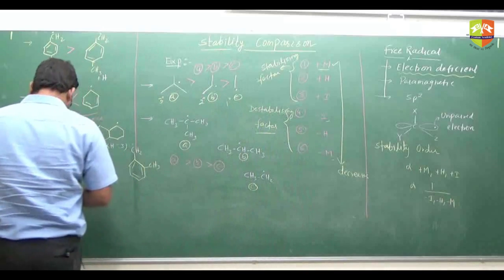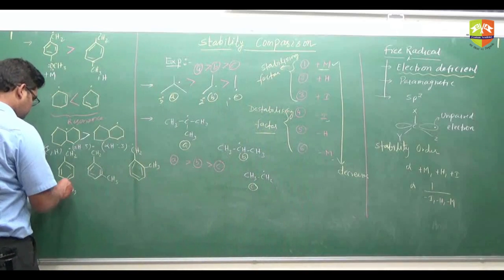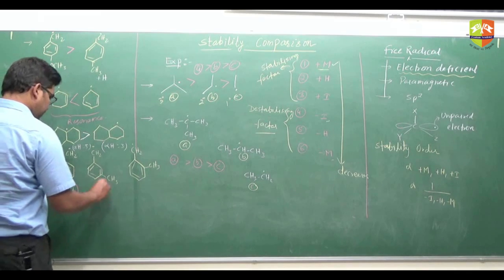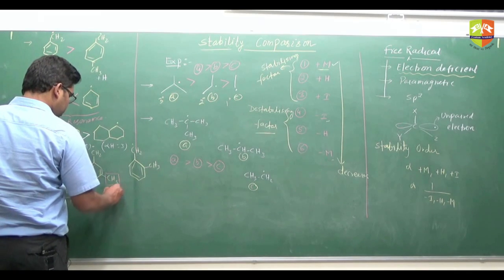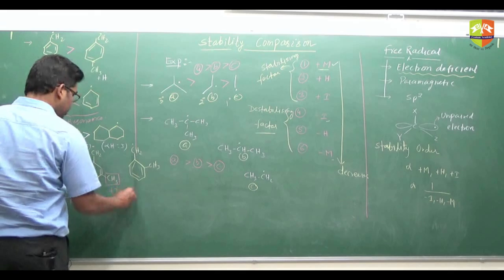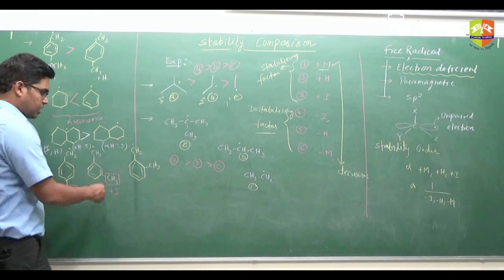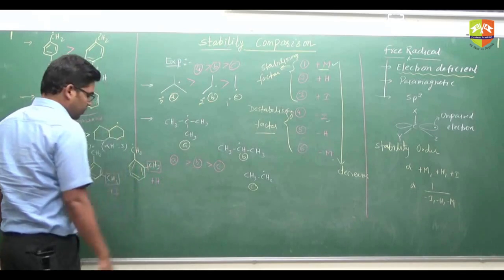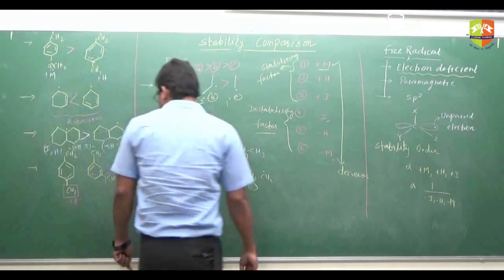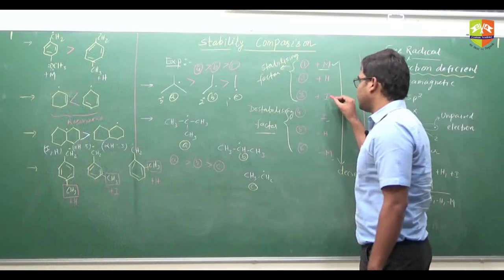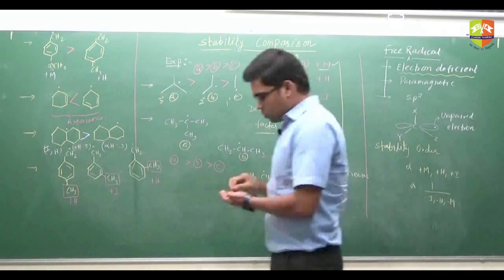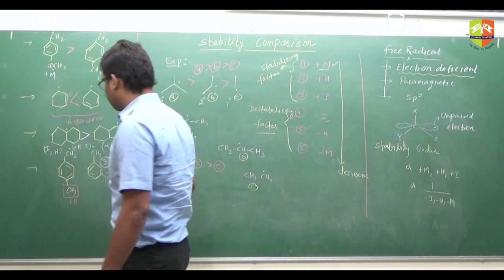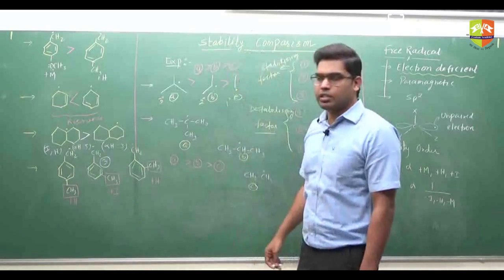This molecule shows +H (hyperconjugation), this one shows +I (inductive), and at the meta position we cannot have hyperconjugation or resonance — only +I. Another shows +H. Since +H dominates over +I, the meta-substituted one is the least stable among the three.